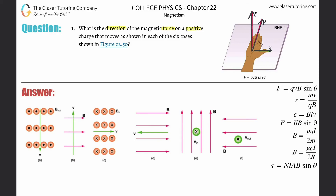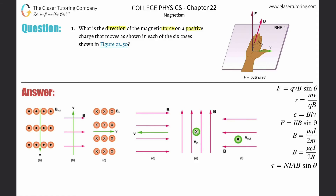Right hand rule number one is for a positive charge. If the problem presents with a positive charge, you will be using this right hand rule number one. All the vectors are shown where the force points out of the palm, the magnetic field points in the direction of the four fingers, and the velocity points in the direction of the thumb. All of these vectors — force, magnetic field, and velocity — are at 90 degrees relative to one another.